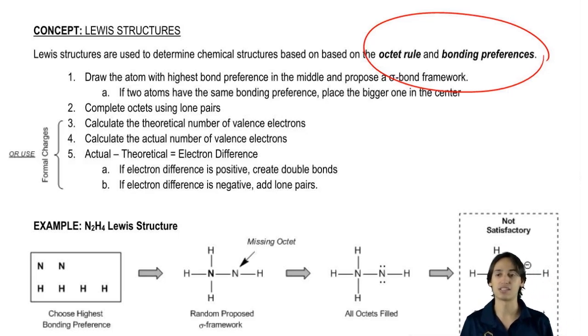So I'm just going to go over these rules really fast. Remember that the first thing you always had to do was if you're given a molecular formula and you're trying to convert that into a Lewis structure, you always start with the atom that has the highest bonding preference in the middle.